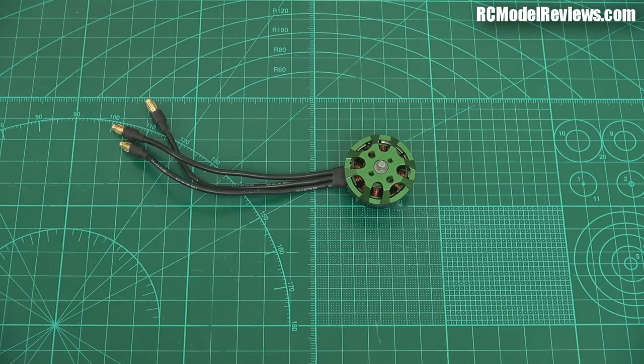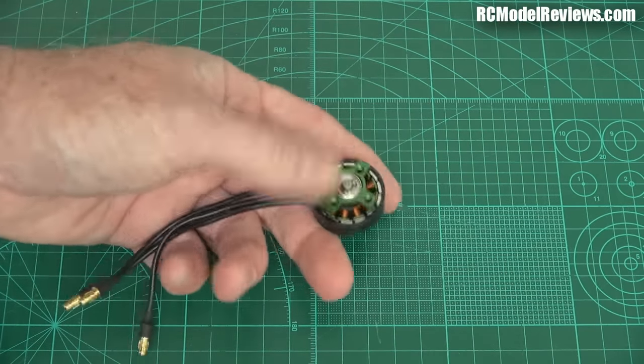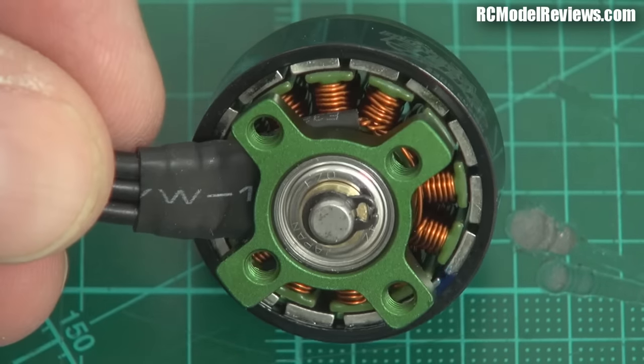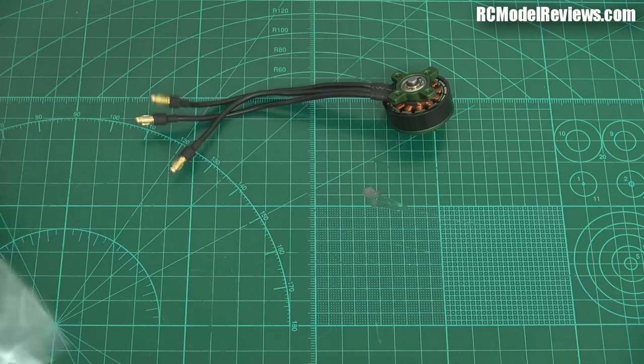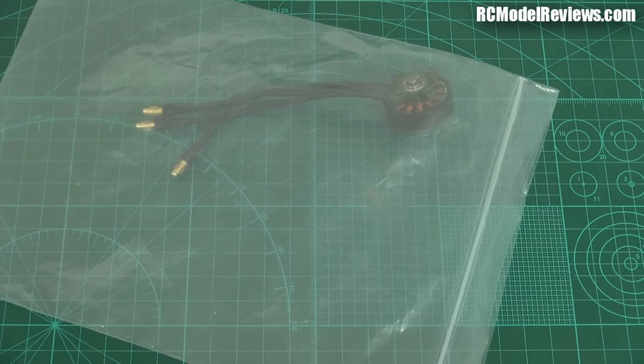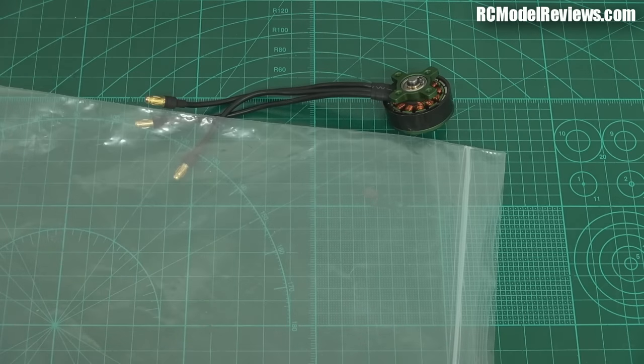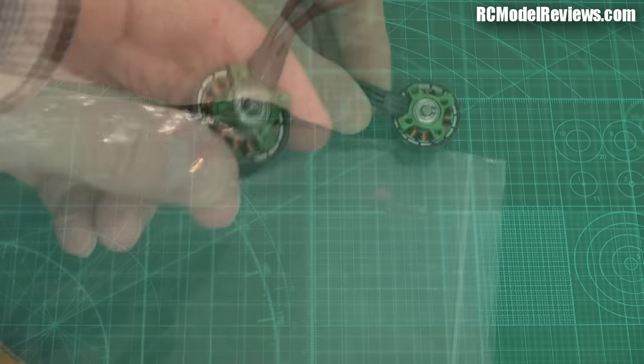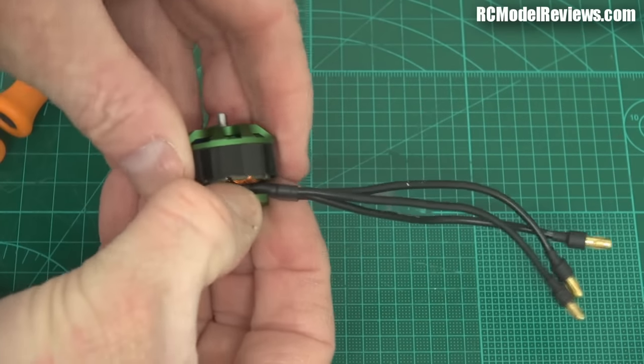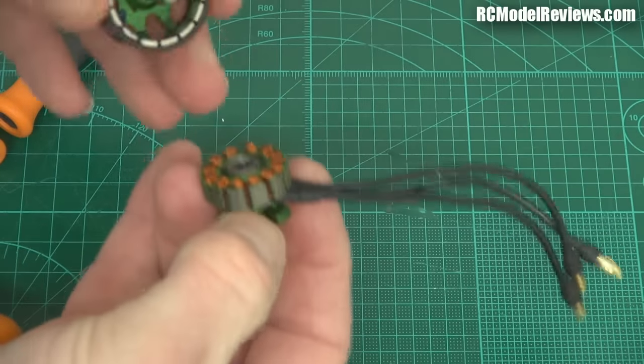Now, a little tip for someone that's never taken a motor apart before. You notice they have these little circlips on the bottom here. You've got to get that off. But these things, they go ping and they disappear. So do it inside a plastic bag. Then when the circlip pings off, you'll find it in the bag. And then you won't go cursing or swearing because now your motor's missing a circlip. Okay, I've got the circlip off now. So we can actually, should be able to just pull the bell off. There we go. Bell's off.